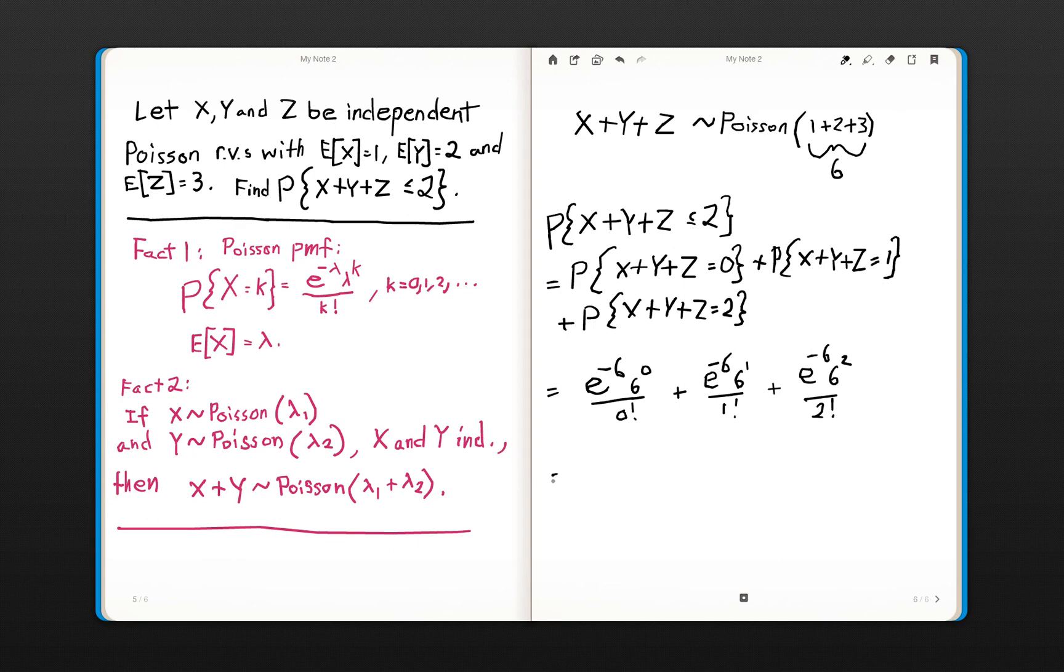And using algebra, I think you can convince yourself that this is equal to e to the negative 6 times 1 plus 6 plus 18, which is just equal to 25 times e to the negative 6. And that's our final answer.